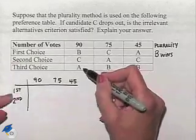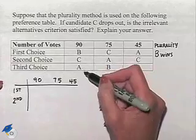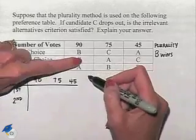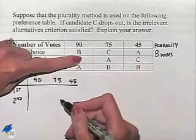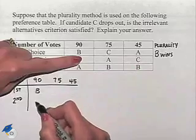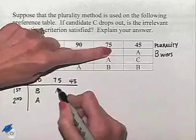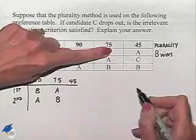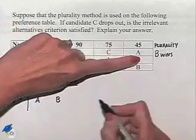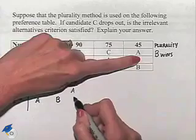If C drops out, any other candidate is going to move up in the ranking. So here we're going to have in our first column, B, A. C drops out, giving us in our second column, A, B. And C drops out, giving us in our third column, A, B.